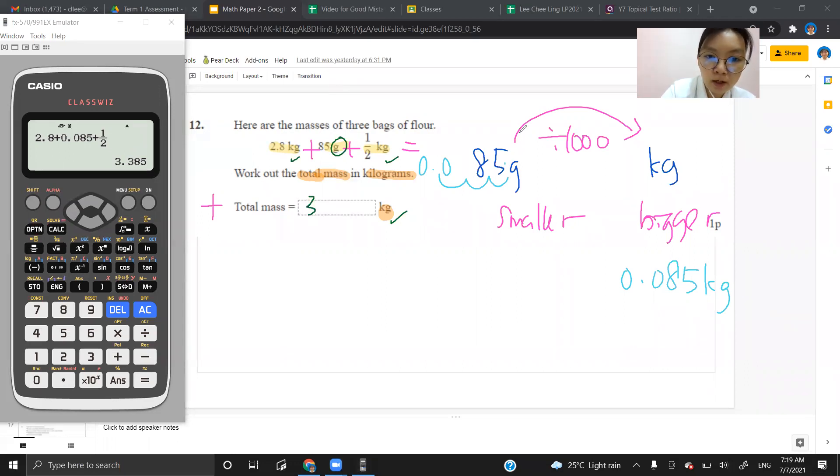So I type in here 3.385. Check, check. The question doesn't ask for any specific decimal points or rounding, right? So that's it. Thank you.